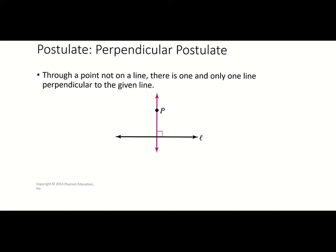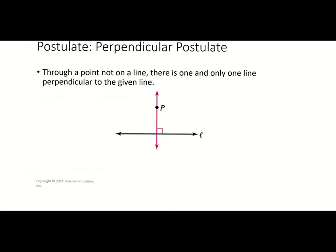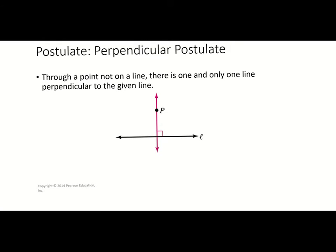The perpendicular postulate is very similar to the parallel postulate, except now you have a point that is not on a line. Again, we have point P here, and through that point there is one and only one line that is perpendicular to the given line. I can draw lots of lines through point P that go through L,